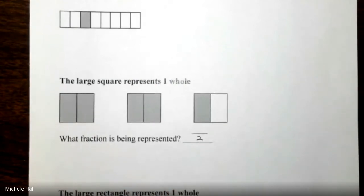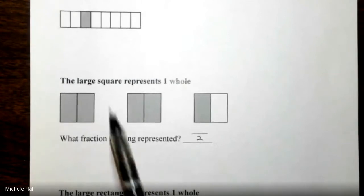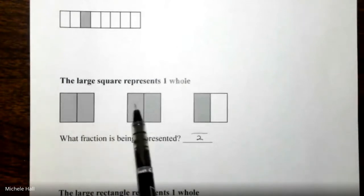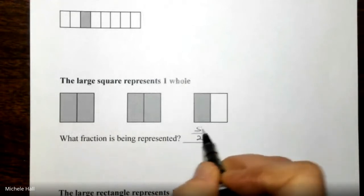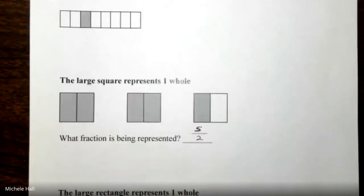Then we would like to know about the shading. There are one, two, three, four, five halves that are shaded.